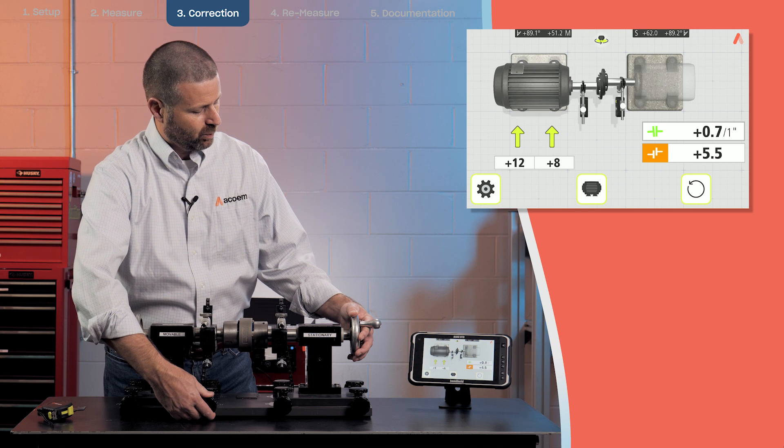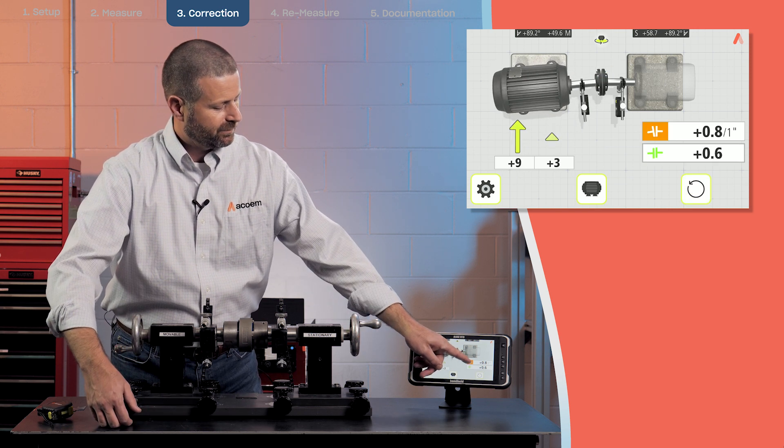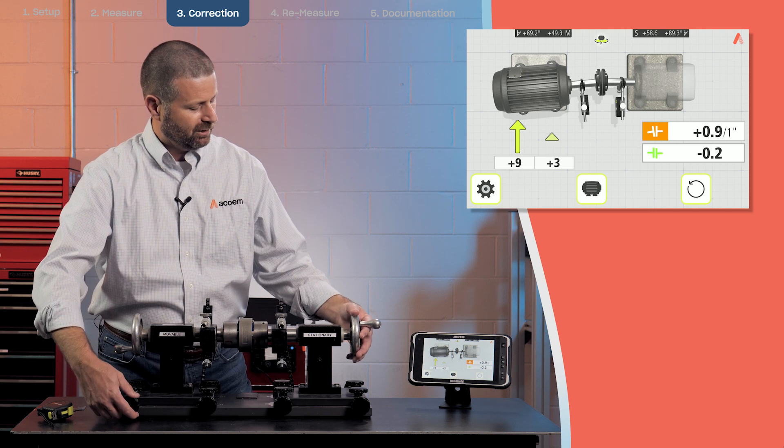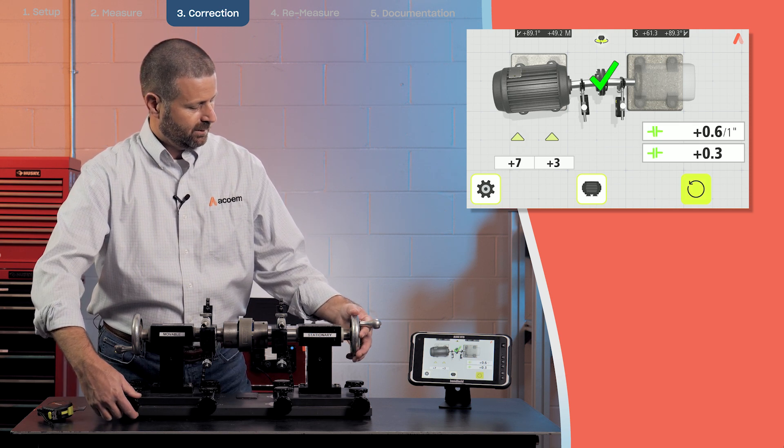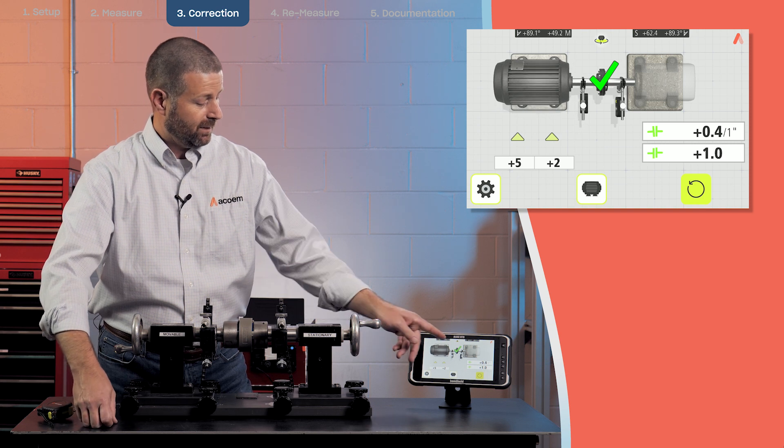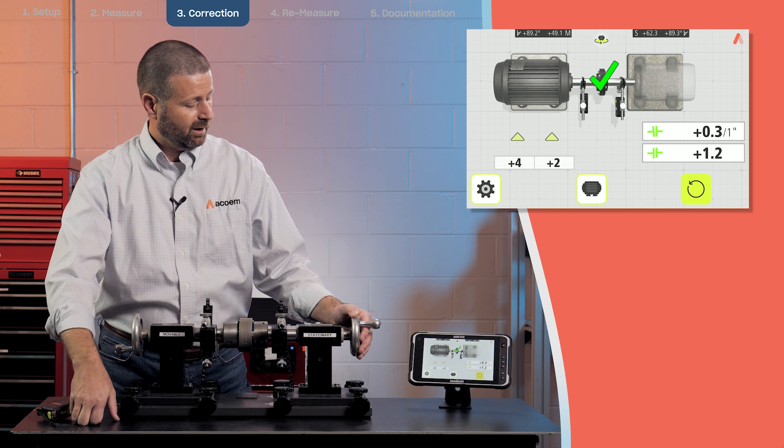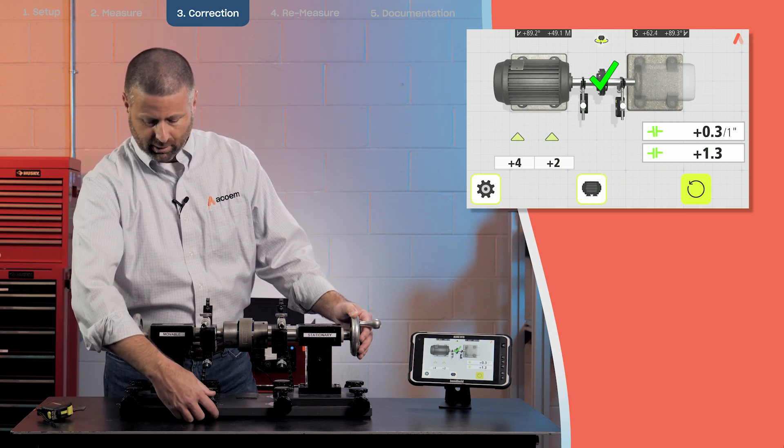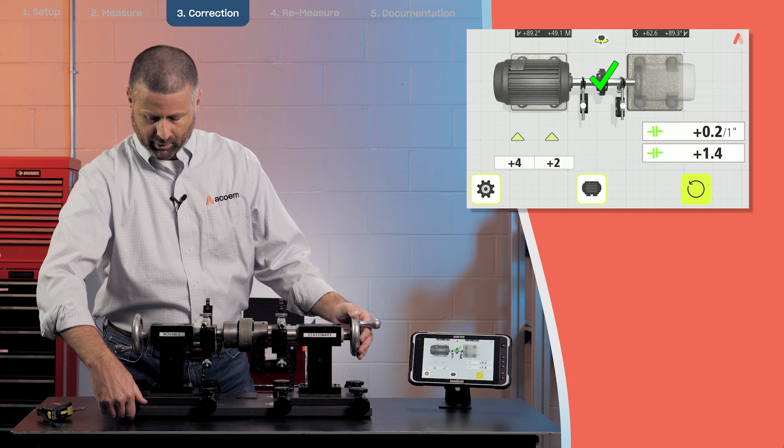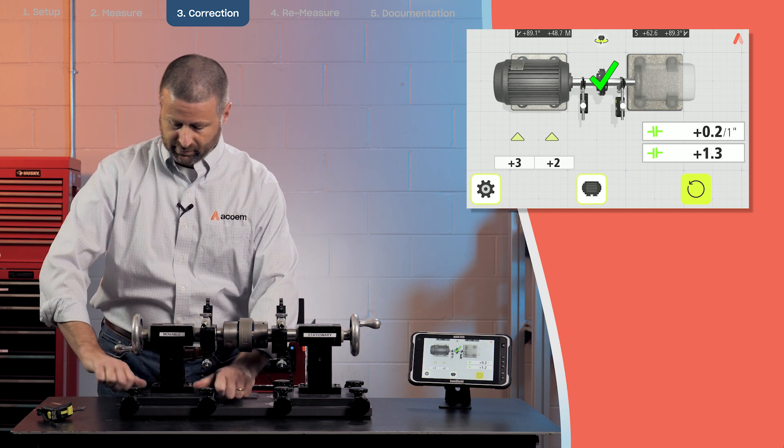And then also once you get within tolerance, you see the angle and offset values turning green. Okay, so now the check mark means that both the angle and the offset have been satisfied in terms of the tolerance. Once we do that, our alignment is complete. We're going to tighten down our bolts, but we're also going to come back and re-measure.